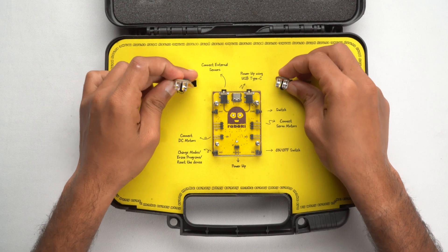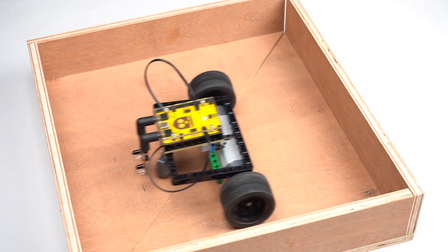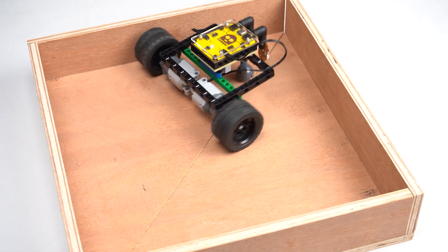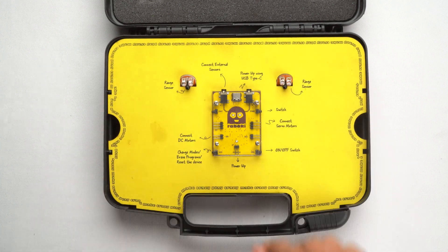These are the range sensors, also known as proximity sensors. They can detect objects nearby. Imagine creating a project where RoboKey can stop or change direction when it senses something in the path. How cool is that?